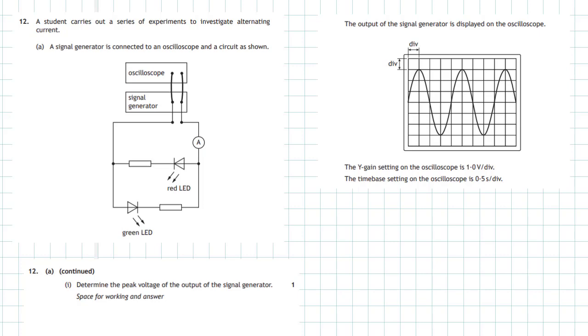Part (i): Determine the peak voltage of the output of the signal generator. We can see from the output of the signal generator on the oscilloscope screen the middle line here, and we can see that the peak voltage is precisely three squares tall. We're told that one division in the Y gain is one volt. So all we have to do is say that the peak voltage Vpeak is equal to the number of boxes we have - three divisions - and each division is 1.0 volts, so the peak voltage is going to be equal to 3 volts.